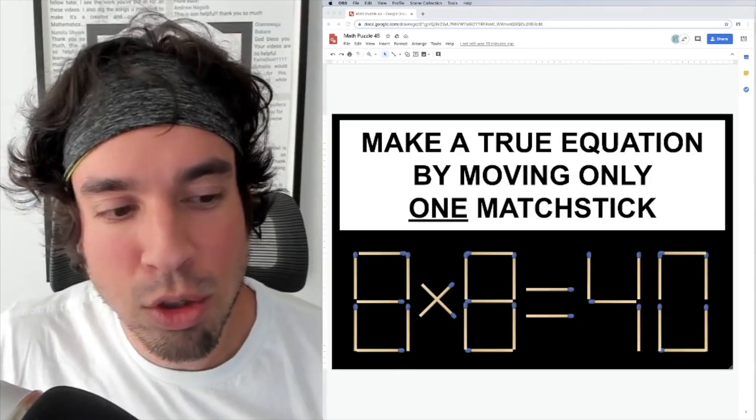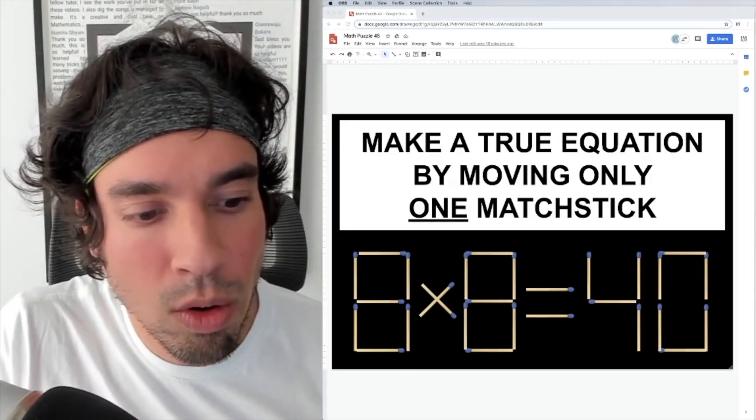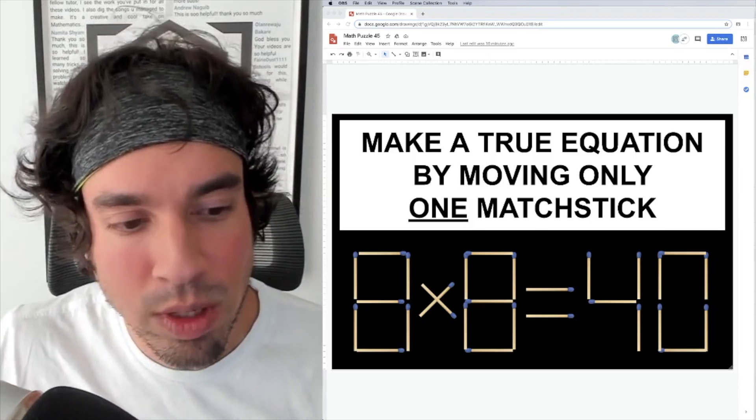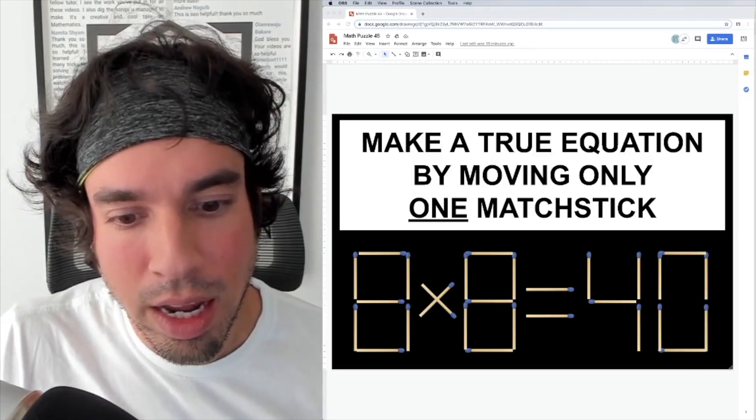All right, so in this puzzle, I'm trying to think obviously we can only change one of the eights. The other eight is going to have to stay as it is, right? Because we got one move. There's nothing really more that you can do to an eight.